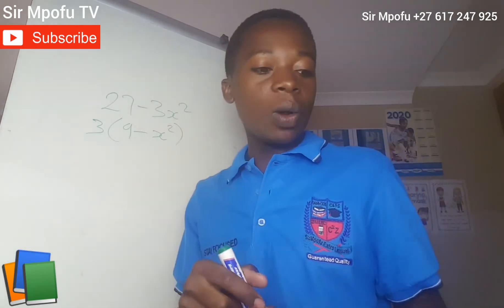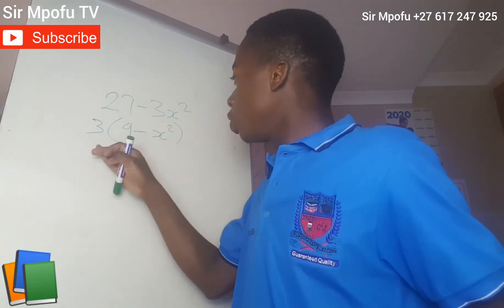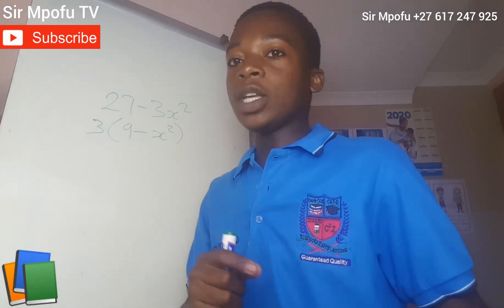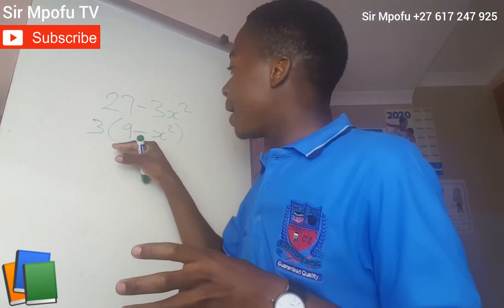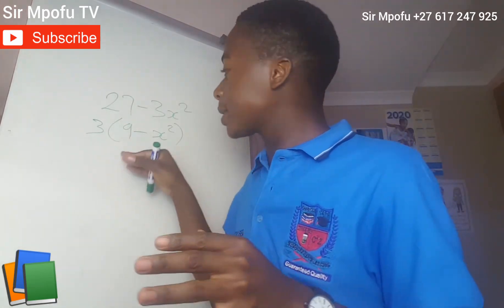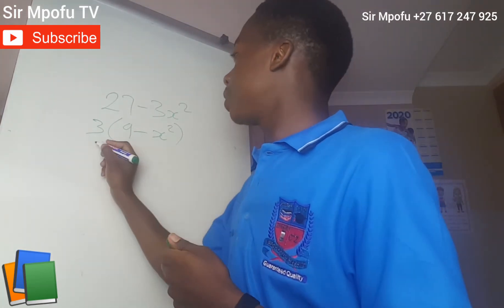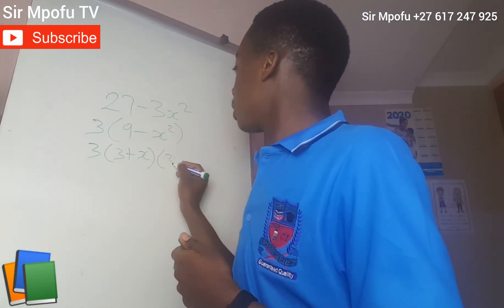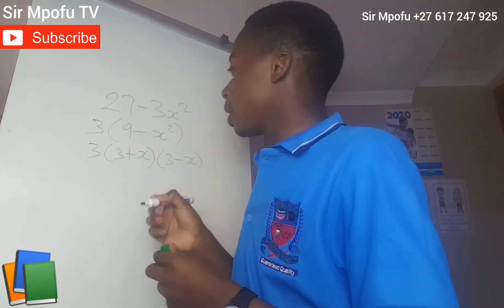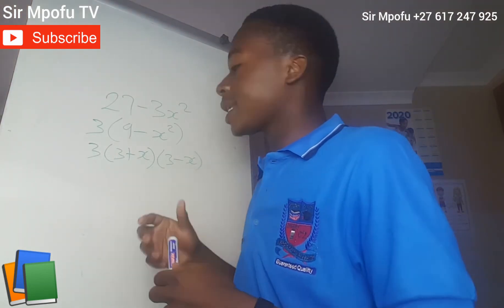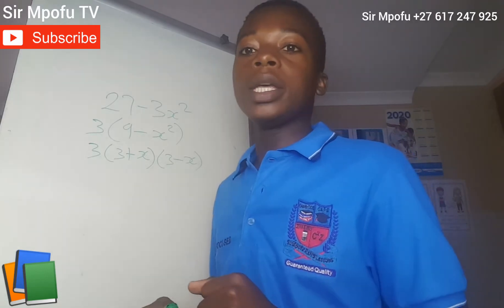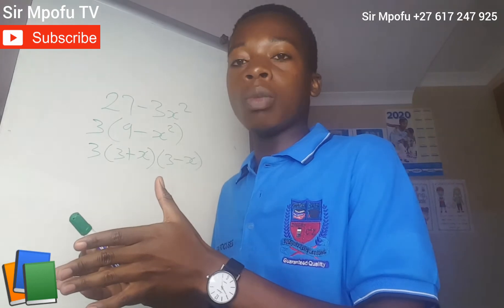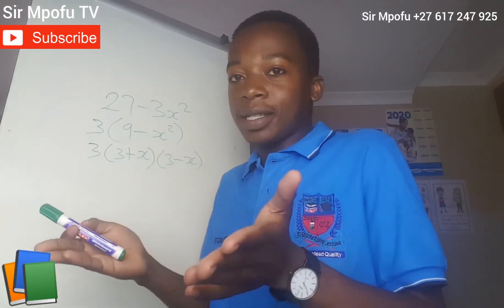The question was saying factorize completely. It means if you end at 3(9 − X²) you are not going to get all the marks because you factorized, yes, but not completely. So to factorize completely, apply the concept of difference of two squares in this bracket. It will be 3(3 + X)(3 − X). Some might want to start with (3 − X) then (3 + X) — it's still one and the same thing, like saying your surname before your first name.